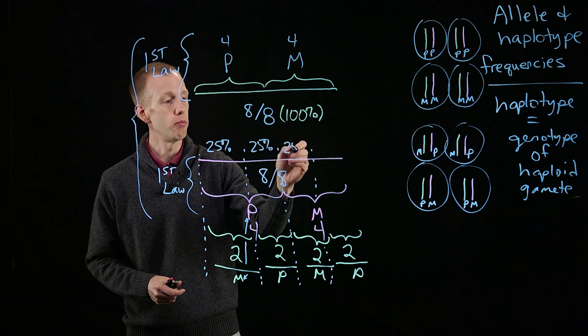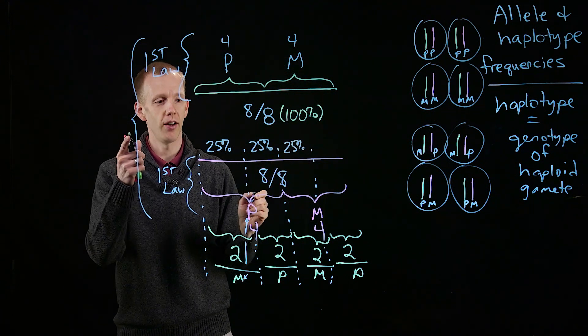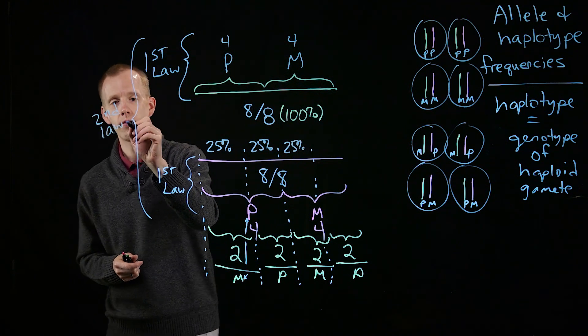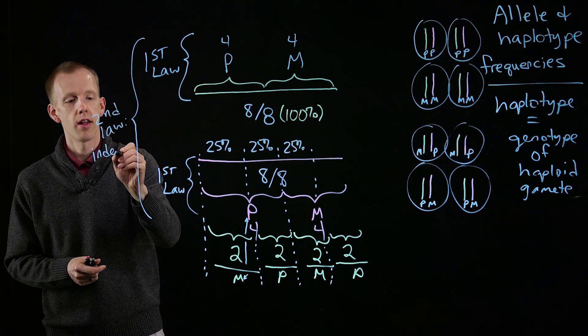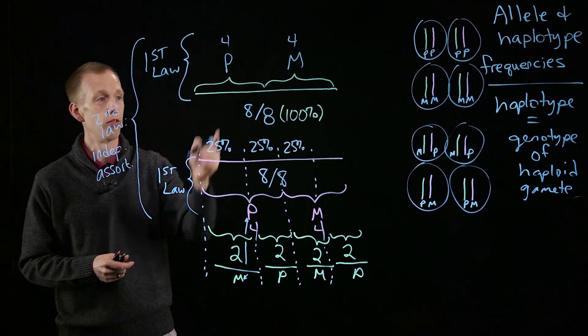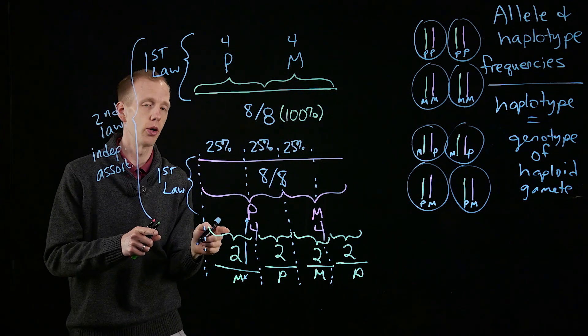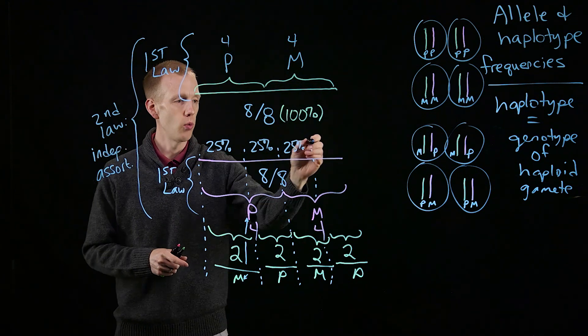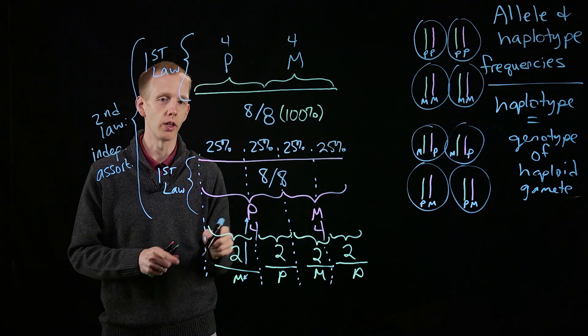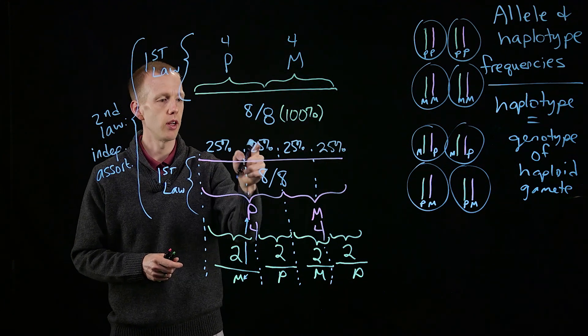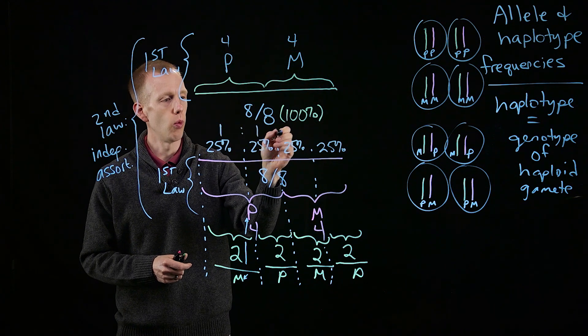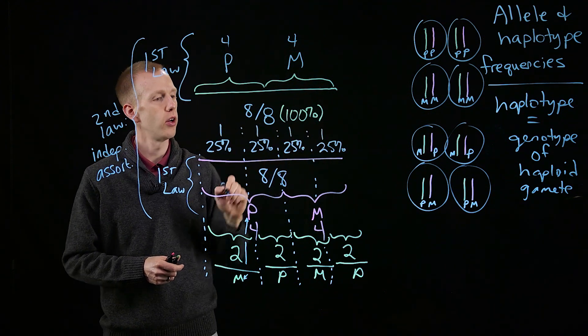And those are, because of Mendel's second law, the independent assortment of the green chromosomes and the pink chromosomes of meiosis, we get a particular distribution of haplotypes, combinations of pink and green chromosomes. 25%, 25%, 25%, 25%. The 1 to 1 to 1 to 1 ratio.